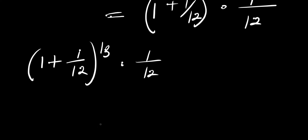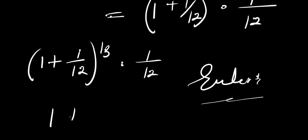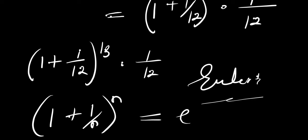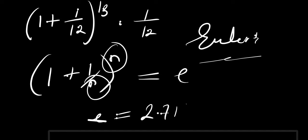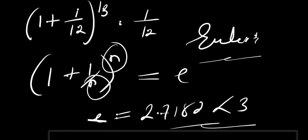Now if we consider Euler's formula, this states that (1 + 1/n)^n approaches e, and the value of e is approximately 2.7182. This value will definitely be less than 3, irrespective of the value of n that you have.